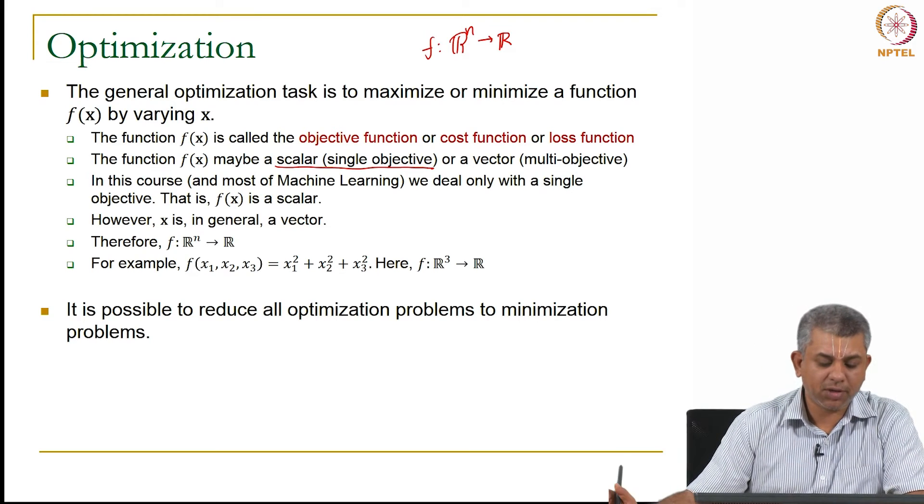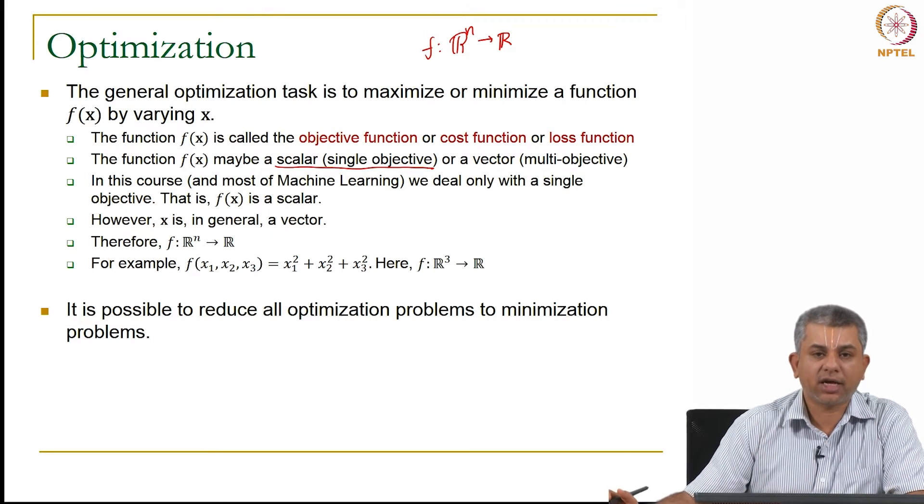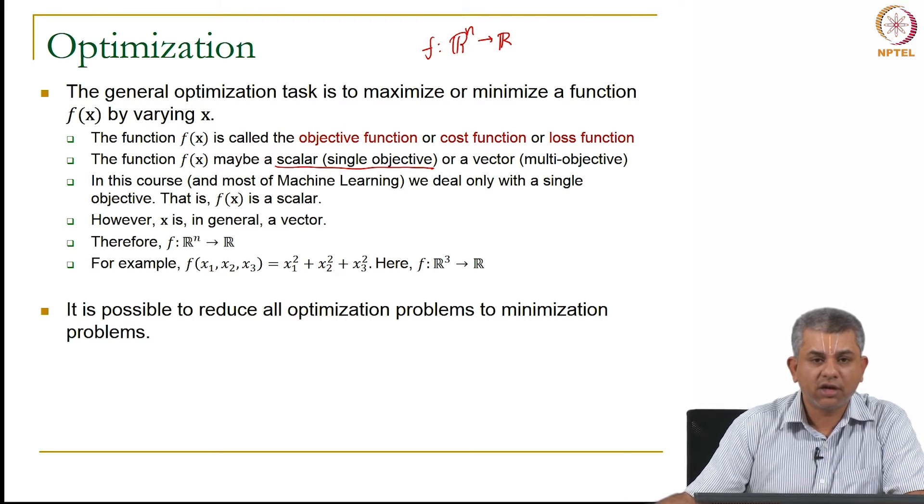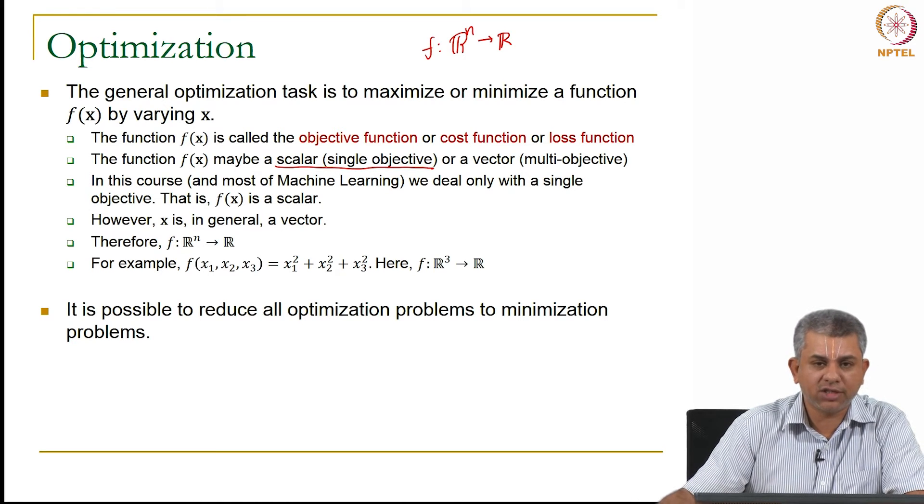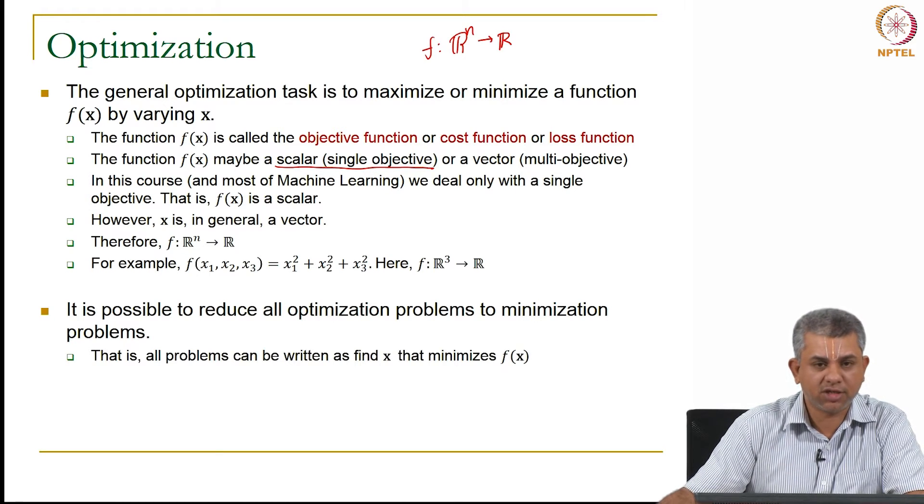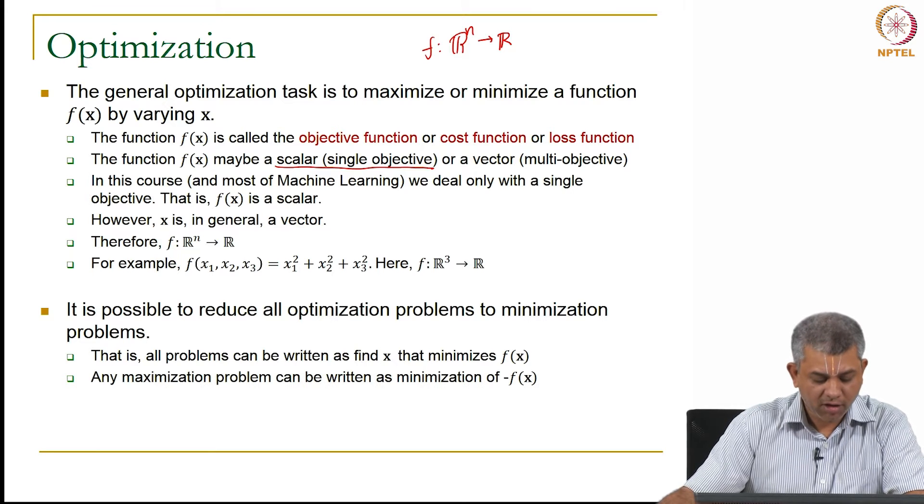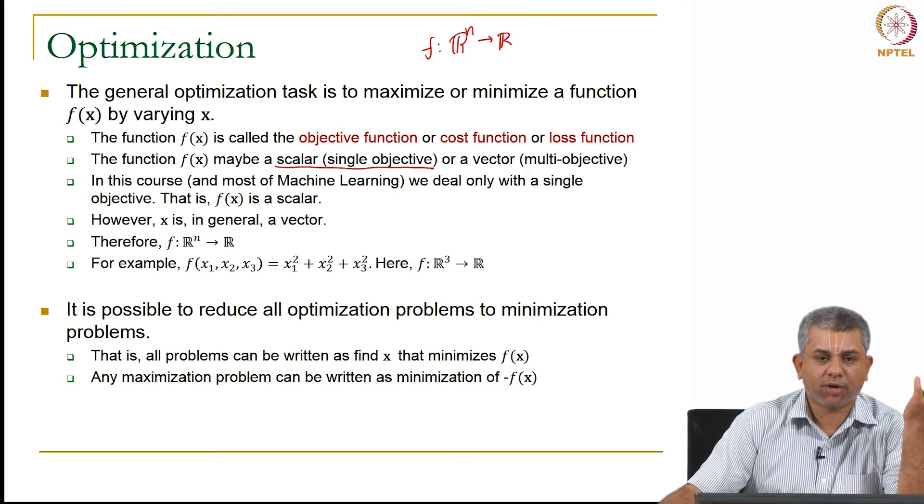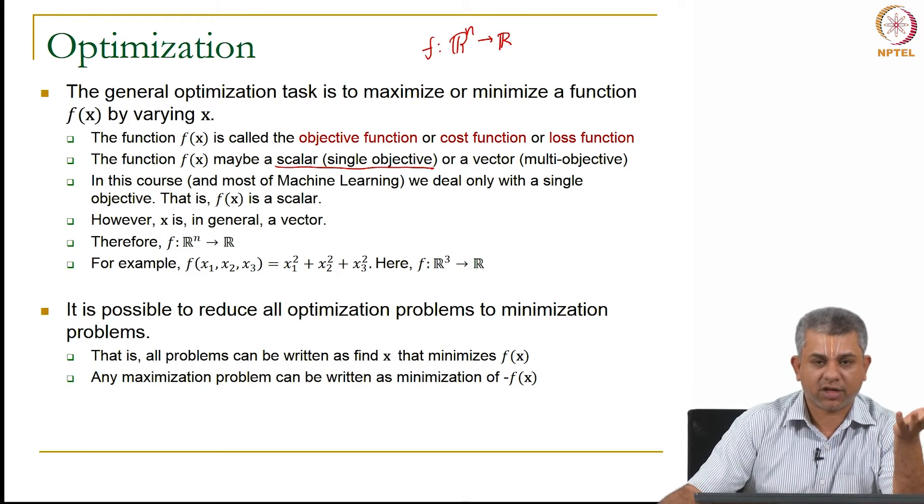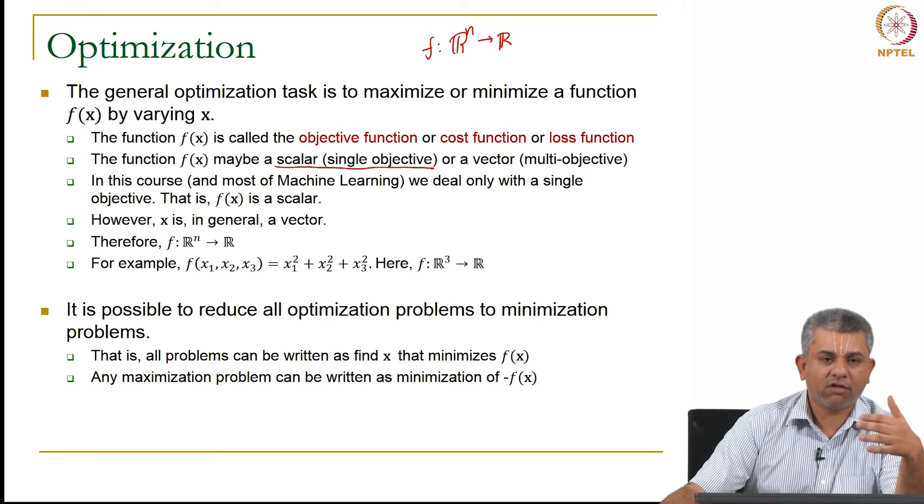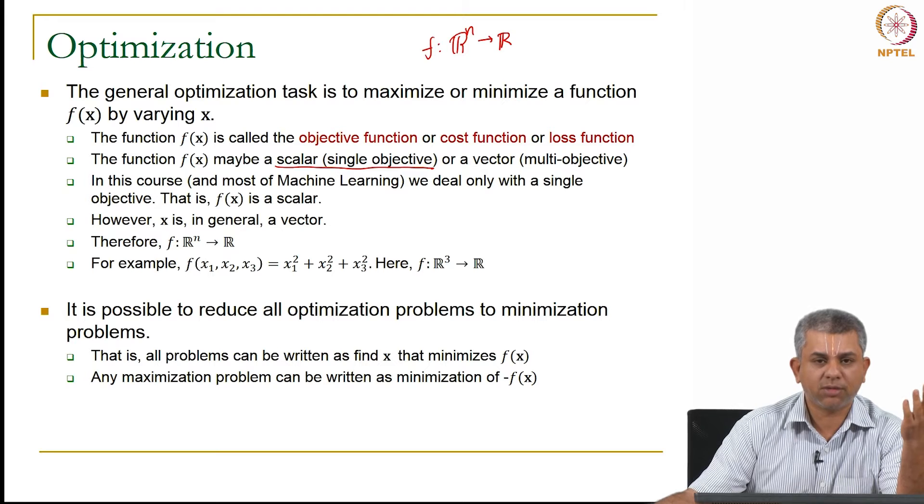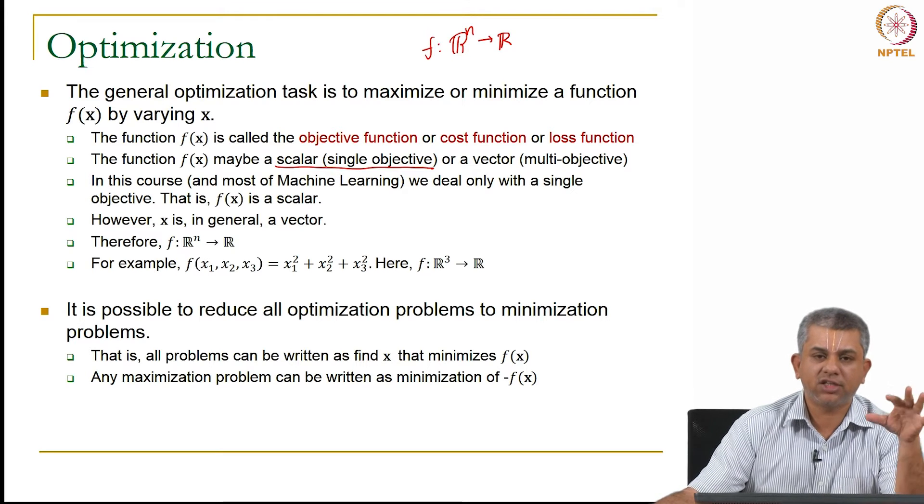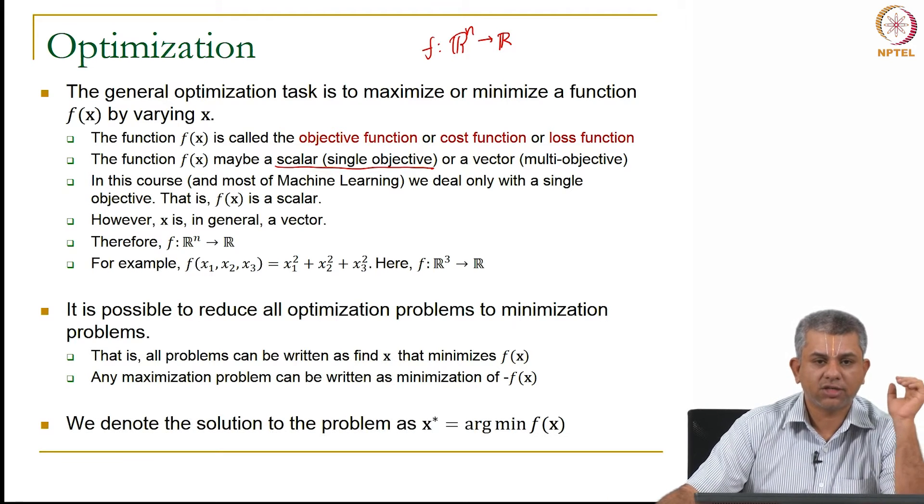Now even though the general optimization task is to either maximize or minimize a function, we will typically talk only about minimization because all optimization problems can be called as minimization problems. Because if it is a maximization problem, you simply minimize minus f of x. So whenever I will be talking in the next few slides as well as the next video, I will only be talking about minimization because maximization is a trivial change by simply changing the sign.